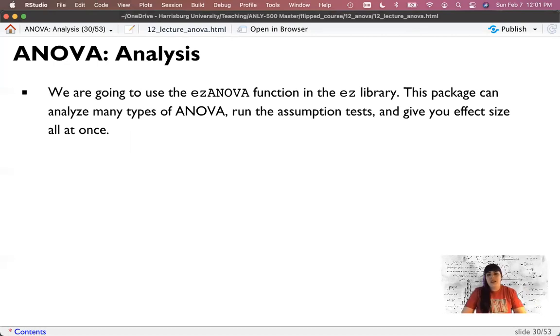So we're going to use the EZ ANOVA function in the EZ library. I love EZ. I love Psyc. GGplot is great. I have this list of packages that have my love and adoration. And EZ is one of them. It will do many different types of ANOVA, help you with the assumption tests, and give you effect sizes all at once. So while I could run this in base R using LM, EZ makes this much more palatable.